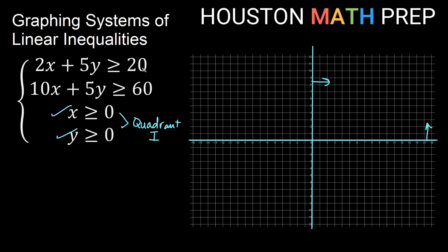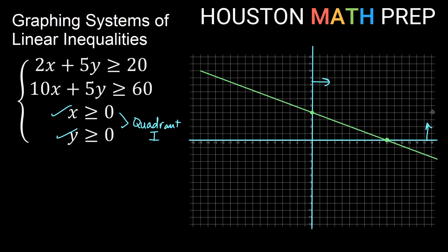For 2x plus 5y greater than or equal to 20, finding the x-intercept: zero out y, giving 2x equal to 20. Dividing by 2 gives x equal to 10. For the y-intercept: zero out x, giving 5y equal to 20. Dividing by 5 gives y equal to 4. Plotting the line through those points, I have a positive y coefficient, so greater than means above the line — I shade above the green line.